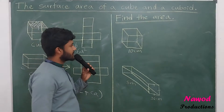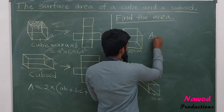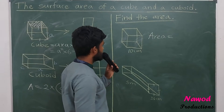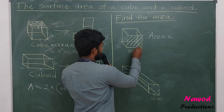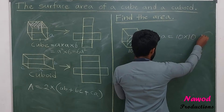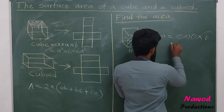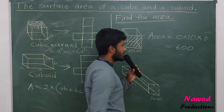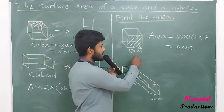Example: find the surface area of a cube with one side of 10 centimeters. Area of one face = 10 × 10 = 100. Multiplied by 6 faces: 100 × 6 = 600. The surface area is 600 cm².